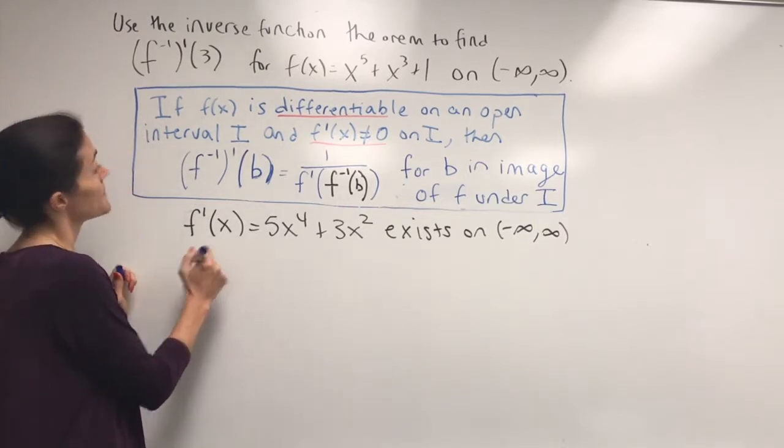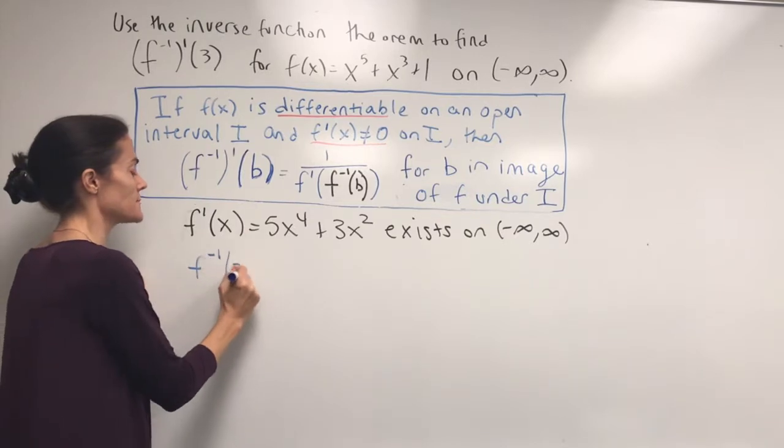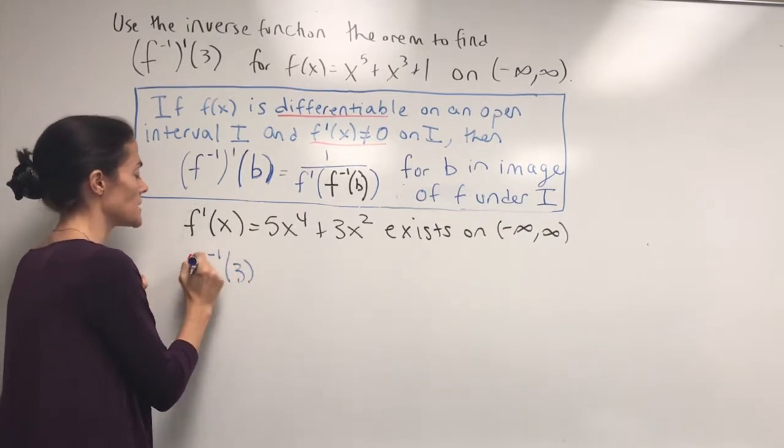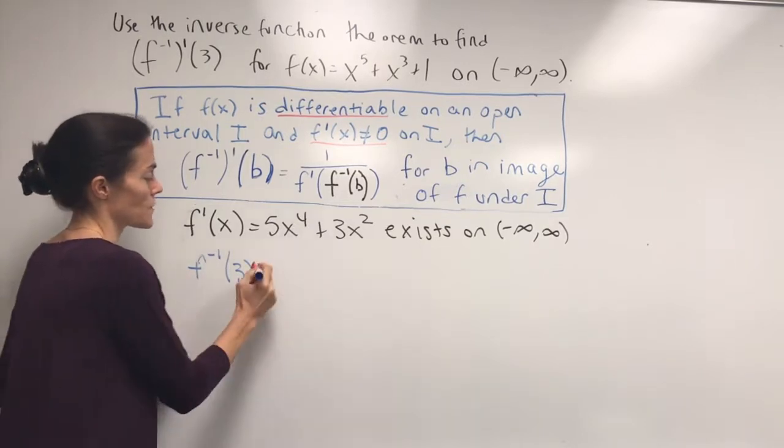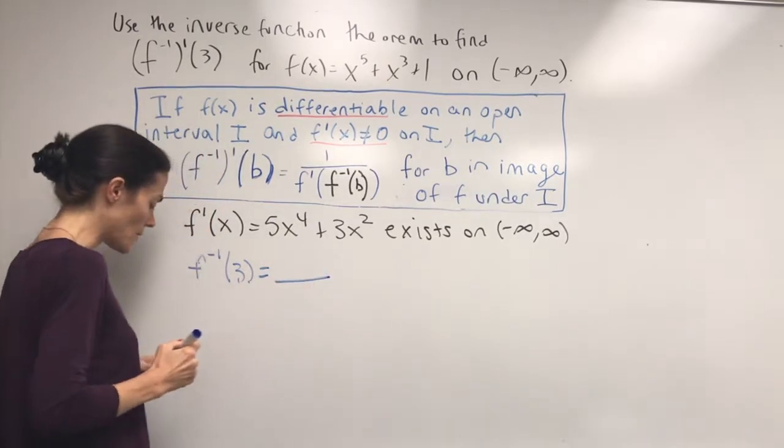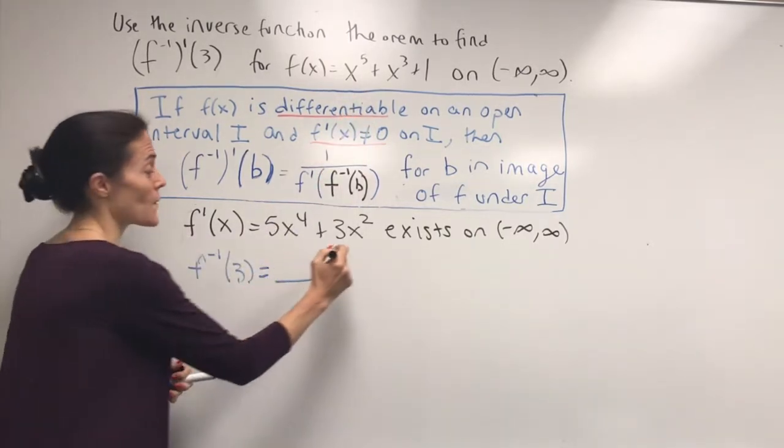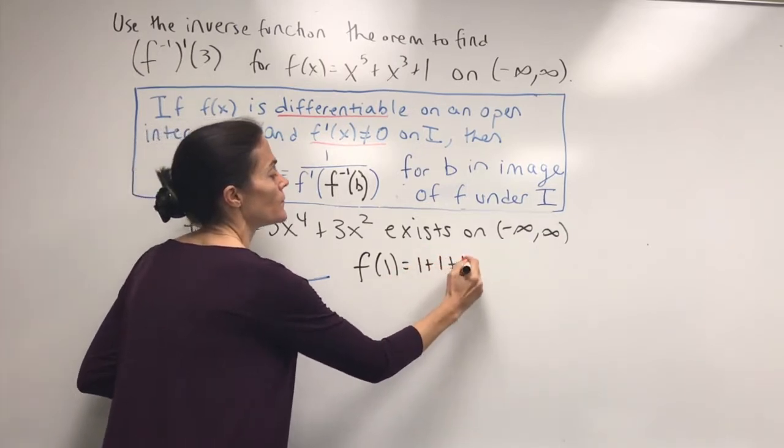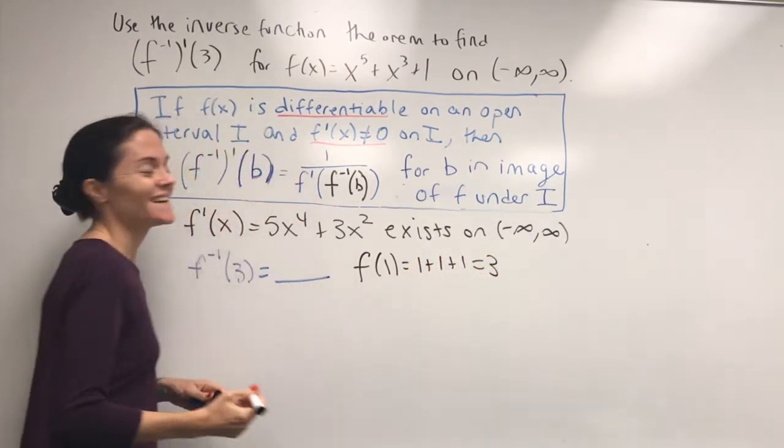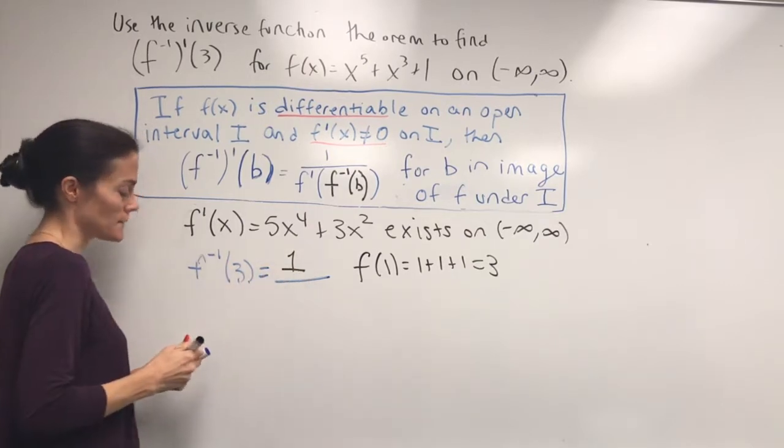So let's take the time now to think about this. We're going to need it anyways in our calculation. Okay, so f inverse of 3. Well, if you look at this function, you notice that evaluating at 1 gives you 3. And so this means that f inverse of 3 must be 1.